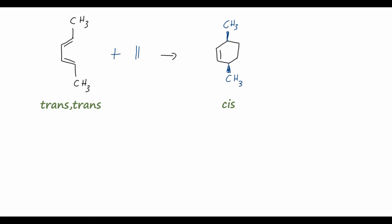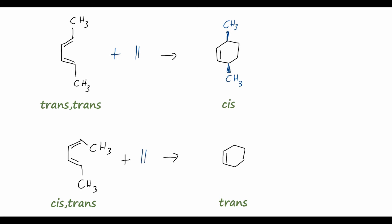Next, if we react a diene very similar to the previous one, except the top alkene is now cis rather than trans, and again react it with ethylene, the methyl groups will be arranged trans to each other in the cyclohexene product. This is because in the original diene we had one cis double bond and one trans double bond, and because those geometries are opposite, we create a trans final product. Since there is no plane of symmetry, we do need to note that we will also produce the enantiomer.